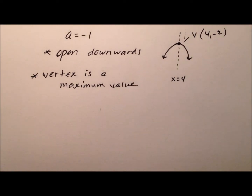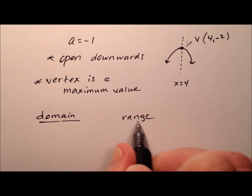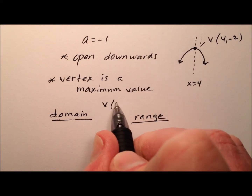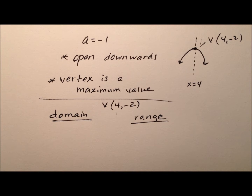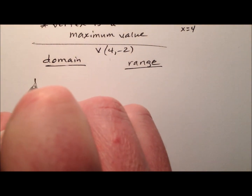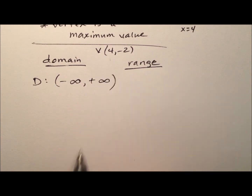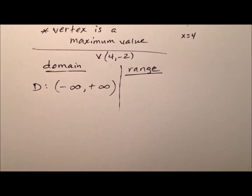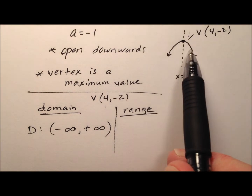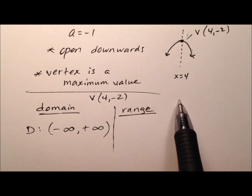Let's talk about the domain and range as well. We know that our vertex is at 4, negative 2. For parabolas, the domain is all real numbers, so we can say negative infinity to positive infinity. Our range, however, is dictated by whether the parabola opens upward or downward.